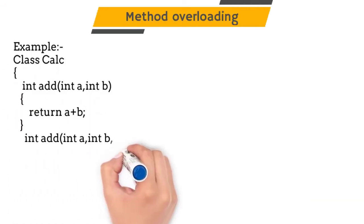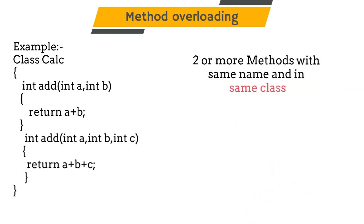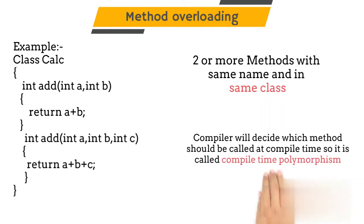In previous video, we have learned that when we create two or more methods or functions with the same name in one class, then it is called method overloading. It helps to increase the readability of a program. It is compile time polymorphism, means the compiler will decide which method to call while compiling the code.